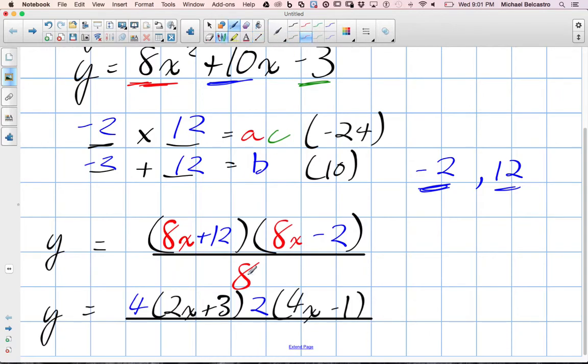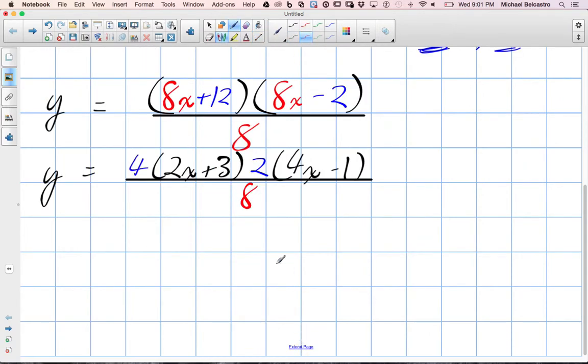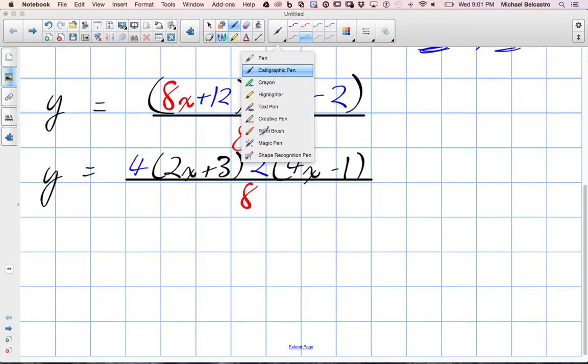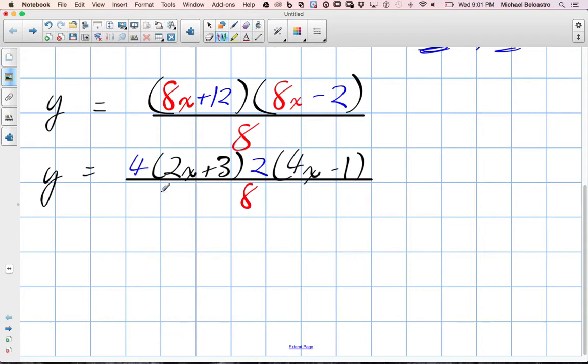What the heck did that do for us? We still have our 8 on the bottom. Well, because this is multiplication, and there's a rule of multiplication called associative property. It doesn't matter what order you multiply things in, because you end up at the same. Think of it like this. What's 5 times 2? 10. What's 2 times 5? 10. It didn't matter what order we did it. So let's rearrange the order of this.